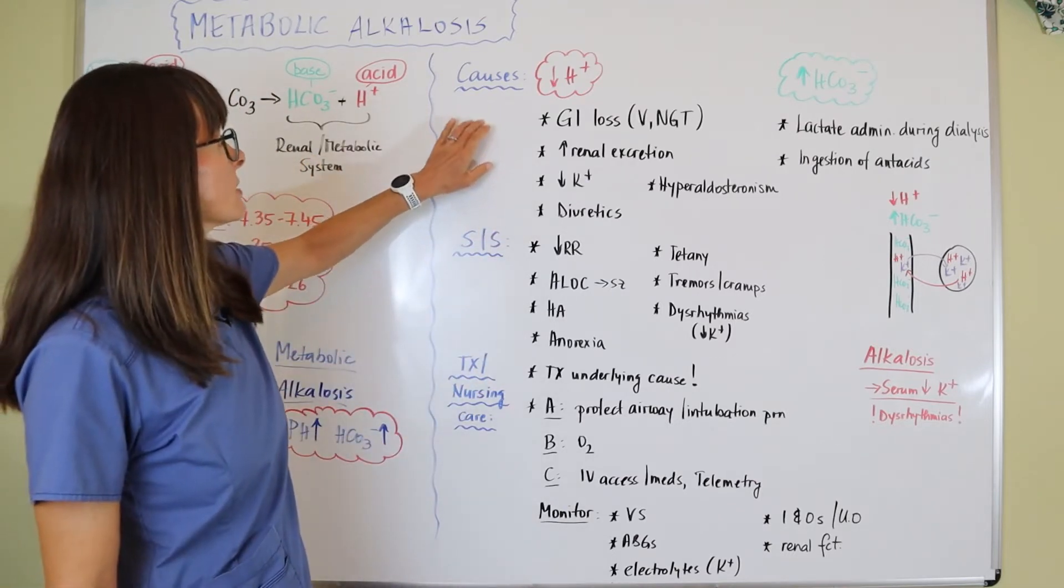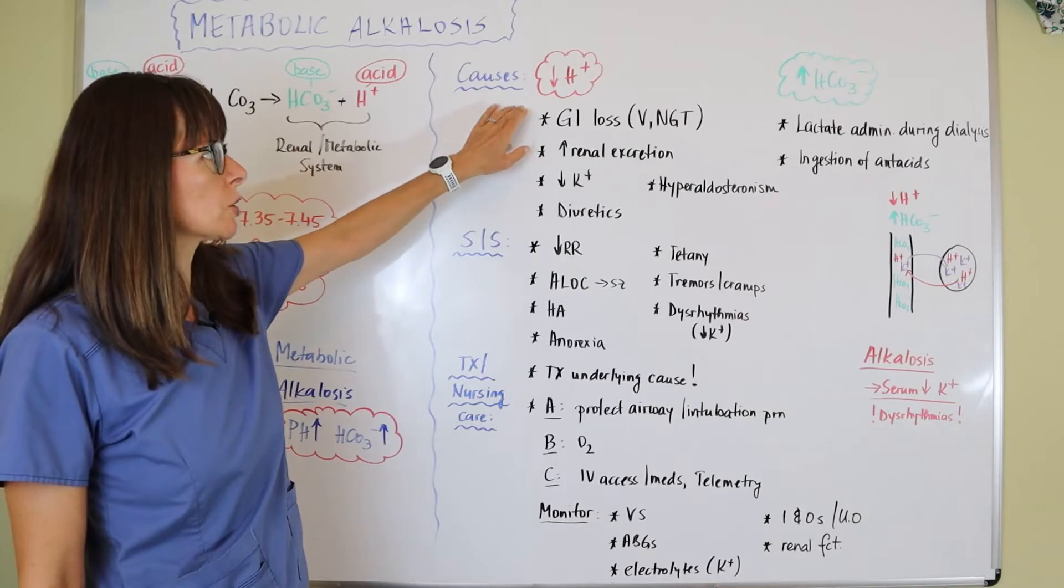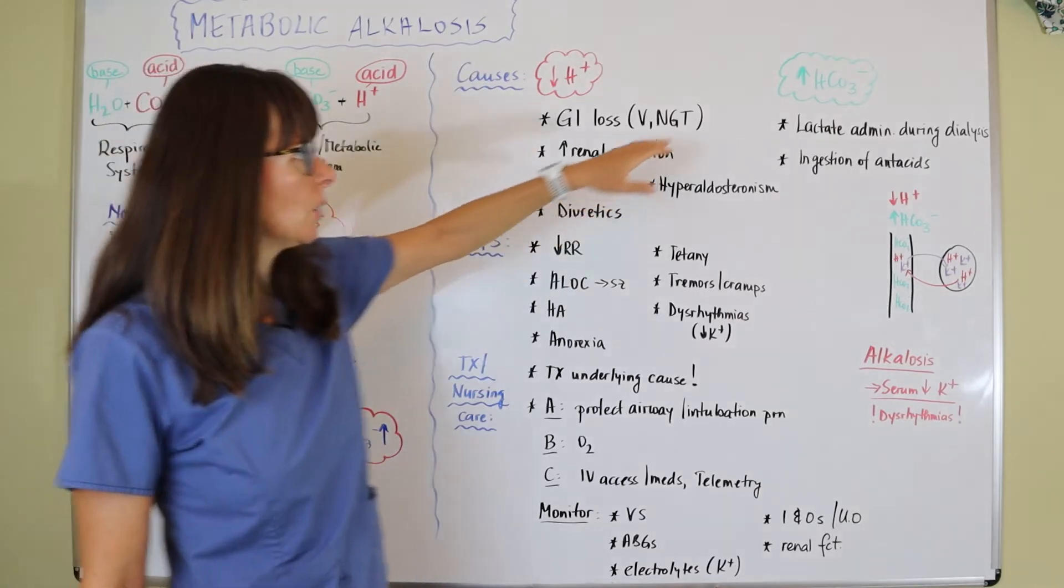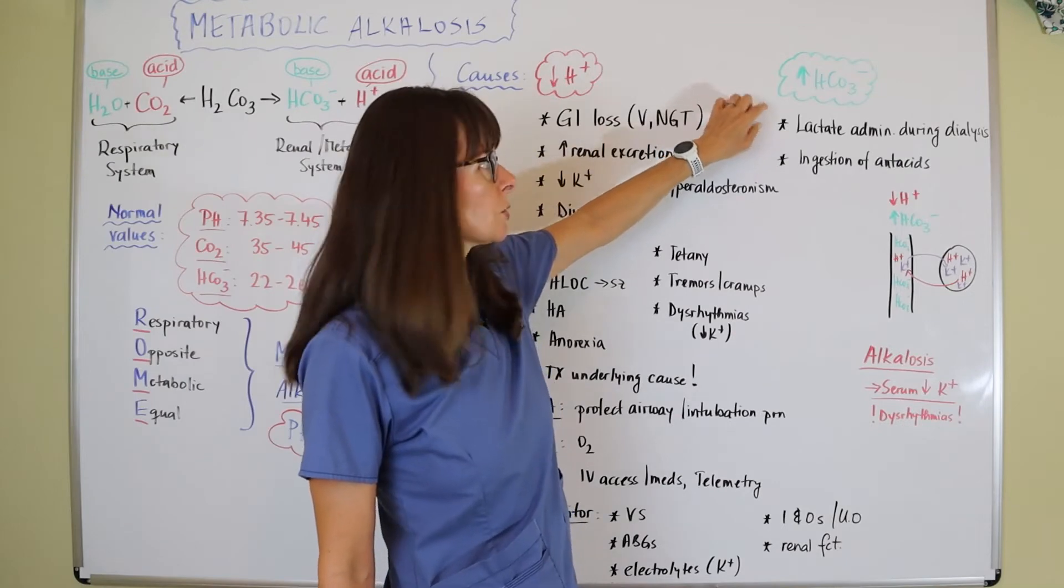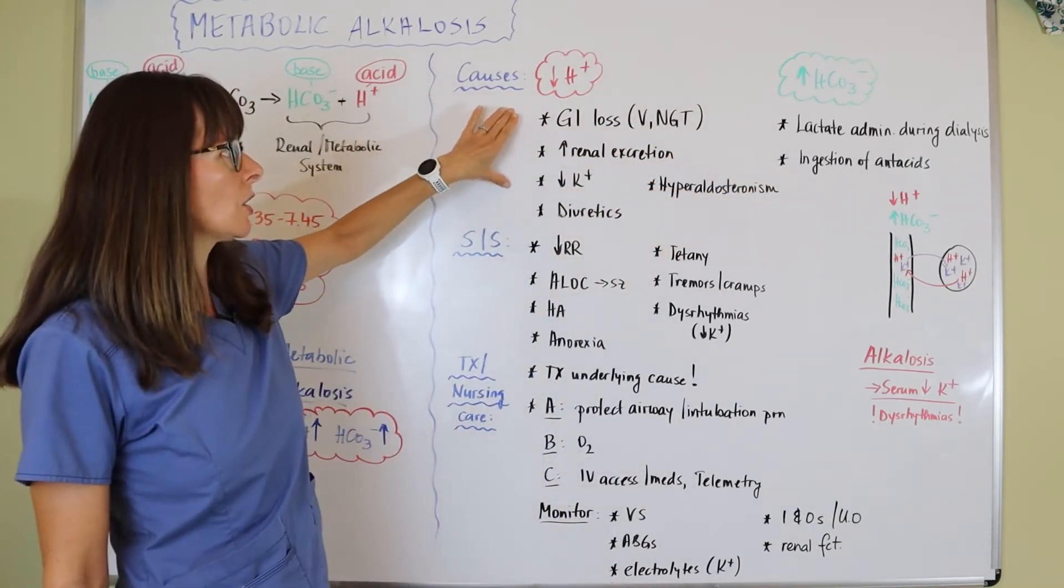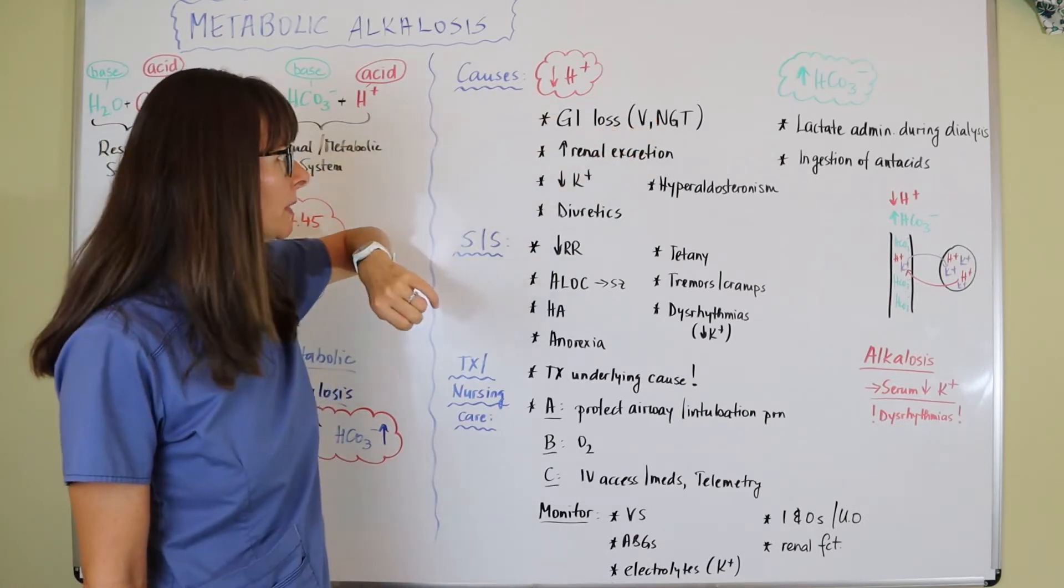As for causes of metabolic alkalosis, this can either be too much loss of hydrogen ion, loss of the acid, or buildup of the base, which is the bicarbonate in our system. The loss of hydrogen ion is much more common than the increase in bicarbonate.